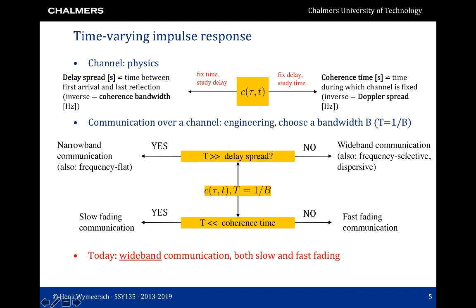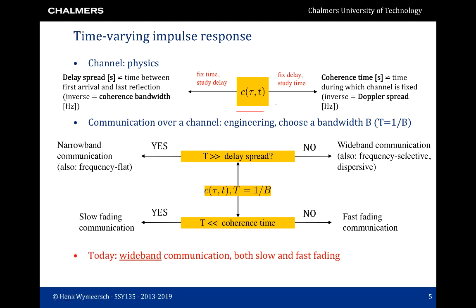From two lectures ago, we remembered the difference between the physical channel and how we communicate over it. The physical channel, c(τ, t), has certain properties including delay spread and coherence bandwidth. The delay spread is the time between the first and last arriving path. The coherence bandwidth is the inverse of the delay spread. The coherence time is the time for which the channel is approximately constant, and the inverse of that is the Doppler spread — the rate at which the channel changes.